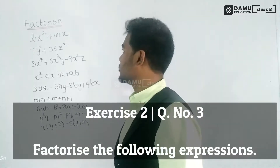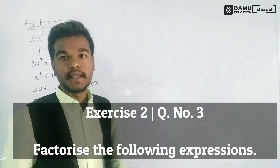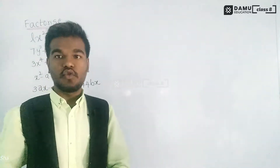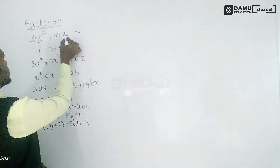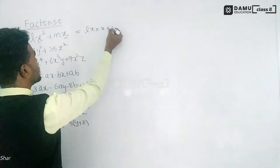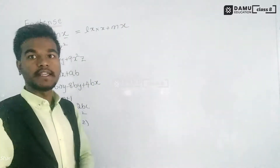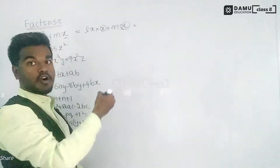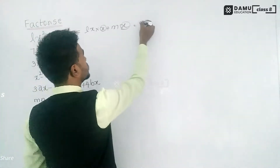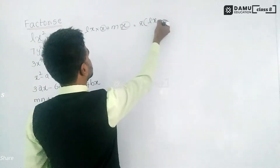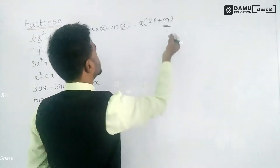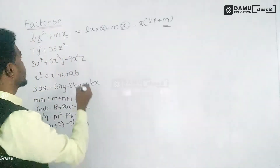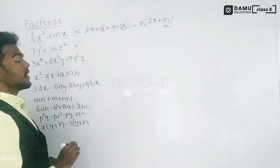Our first question is Lx² + mx. We're going to write Lx² and mx. Here x is common in both, so we take x outside. The factorized form is x into (Lx + m). So we have factorized Lx² + mx as x(Lx + m).